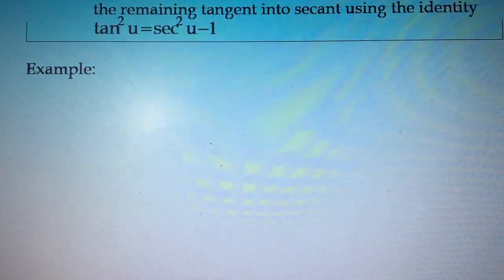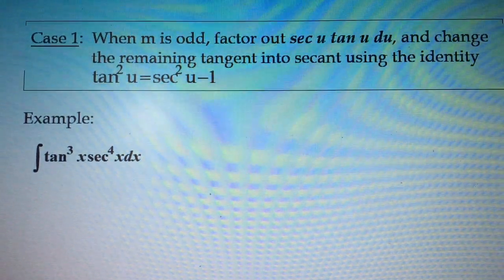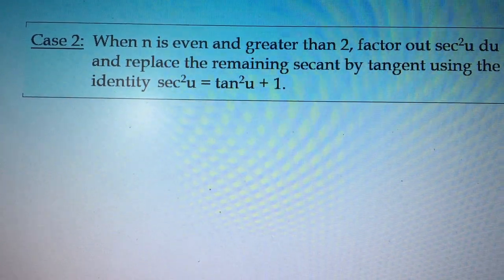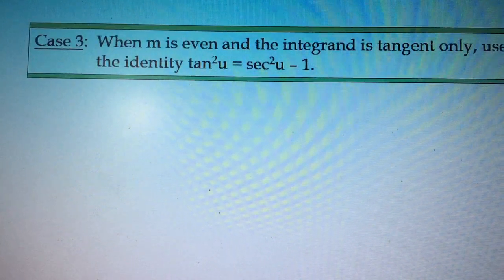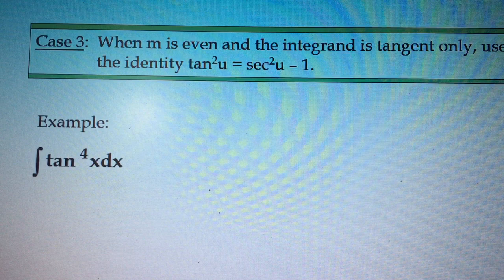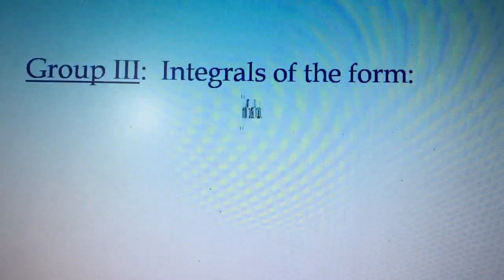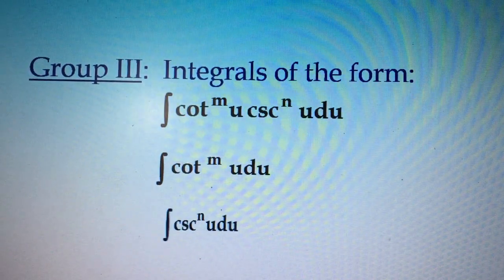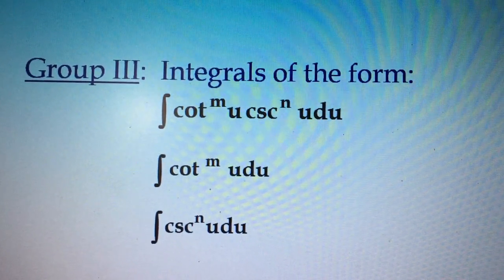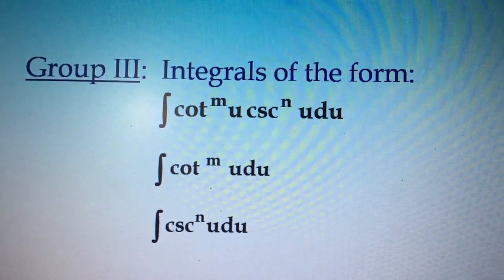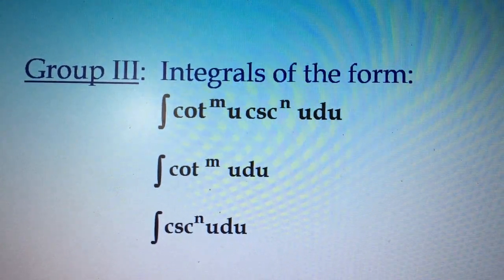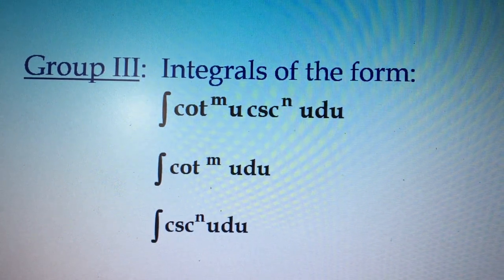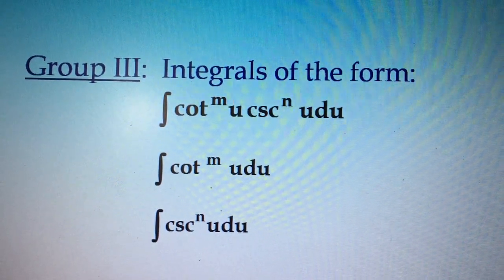We solved problems for Group 2 because we have three cases also: Case 1, Case 2, and Case 3, and we solved examples for each case. Then we discussed Group 3 — integrals of the form combining cotangent and cosecant, and also sometimes you will encounter integral of cotangent only, or sometimes integral of cosecant only.